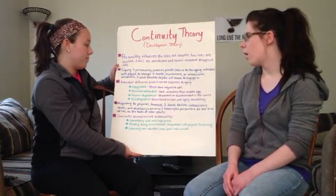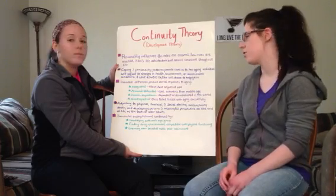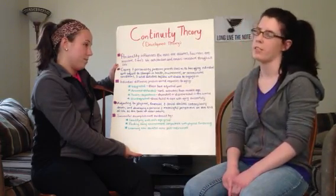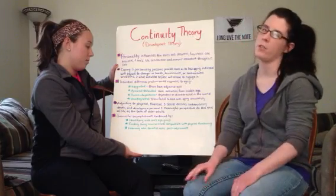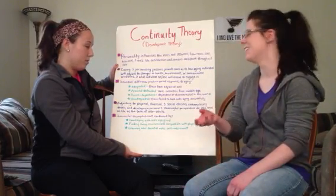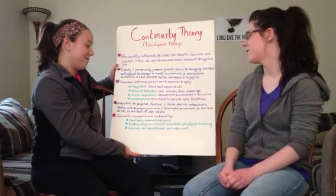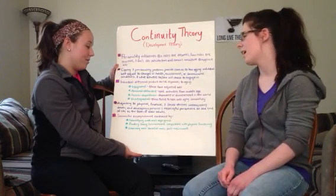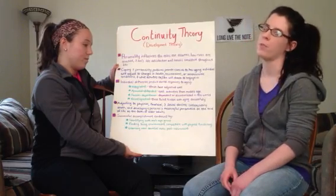There are four different responses people can have to aging. We have integrated, which means you adjusted well. You have armor-dependent, which means you're still doing what you were trying to have done in middle age. Passive-dependent, which means you're disinterested or dependent on others. And unintegrated, which means you have failed to cope with aging.